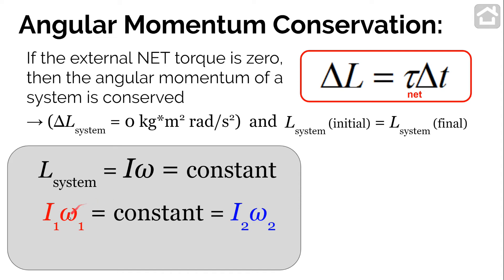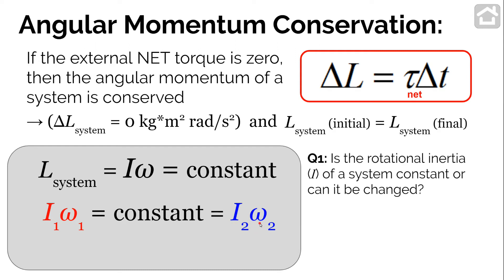Since angular momentum — rotational inertia times angular velocity — must stay constant, the product I times omega is the same at any point during the spin. If I doesn't change, then omega doesn't change either. But here's the key question: is the rotational inertia of a system constant, or can it be changed? Since where mass is distributed affects how much a system resists angular acceleration, rotational inertia can change if mass moves closer to or farther from the point of rotation.